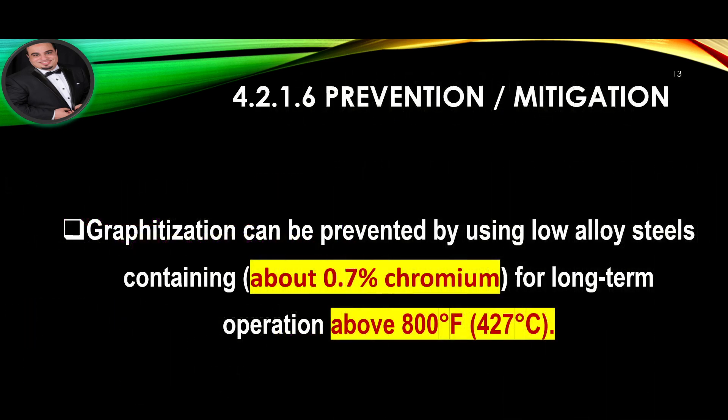Prevention and Mitigation: Graphitization can be prevented by using low alloy steels containing about 0.7% chromium for long-term operation above 800°F (427°C).